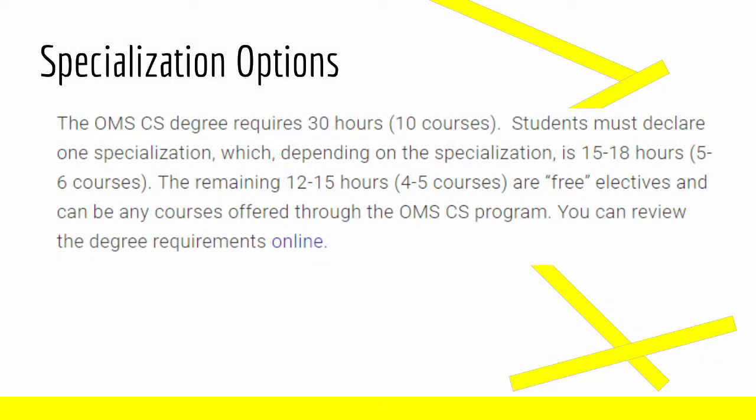Before we jump into each specialization, let's take a minute and look at exactly what Georgia Tech means by specialization. A specialization is a focused area within the Masters of Computer Science program. Each student is required to complete one within the program, which takes between five and six courses, depending on the specialization. Since the program requires a total of ten courses, the remaining four to five courses outside of the chosen specialization are considered free electives and can be almost anything offered within the program.